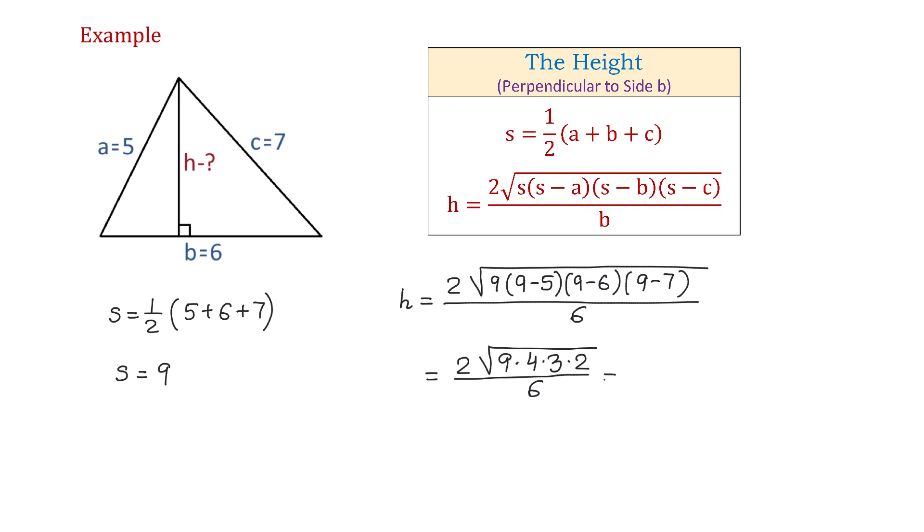So, we will have 2 times square root of 216 over 6. Then, we can write 216 as a product of 36 and 6, all over 6.